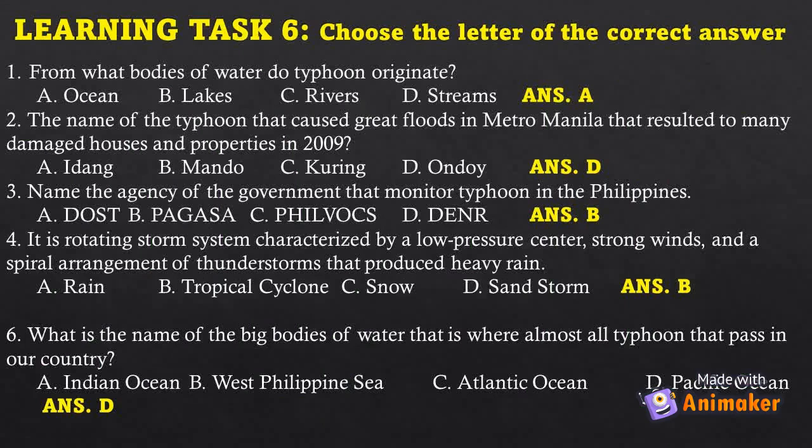Learning Task Six — choose the correct answer. One: From what body of water do typhoons originate? Answer: A — Ocean. Two: The typhoon that caused great floods in Metro Manila resulting in many damaged houses and properties in 2009? Answer: D — Ondoy. Three: Name the government agency that monitors typhoons in the Philippines. Answer: B — PAGASA. Four: It is a rotating storm system characterized by a low-pressure center, strong winds, and a spiral arrangement of thunderstorms that produce heavy rain. Answer: B — Tropical Cyclone. Five: What is the name of the large body of water where almost all typhoons that pass through our country originate? Answer: D — The Pacific Ocean.